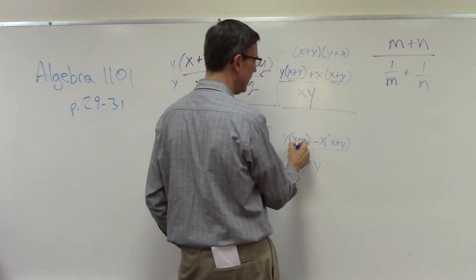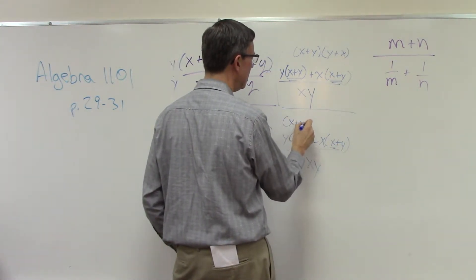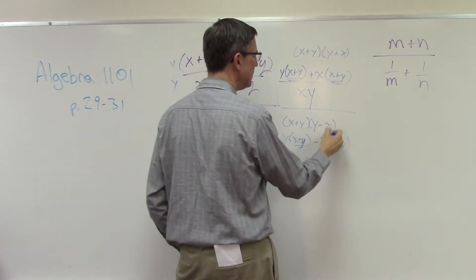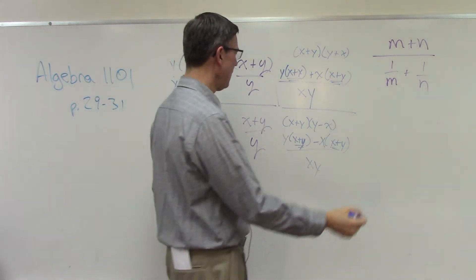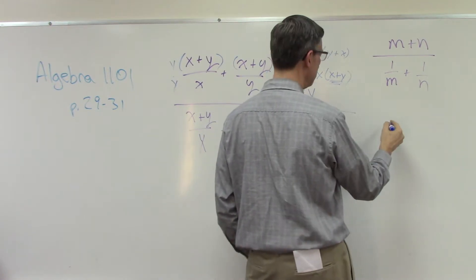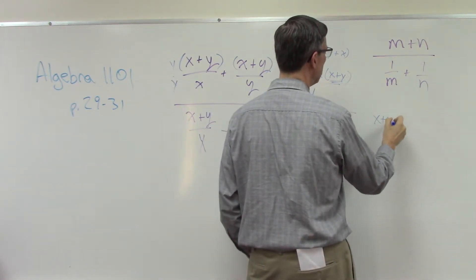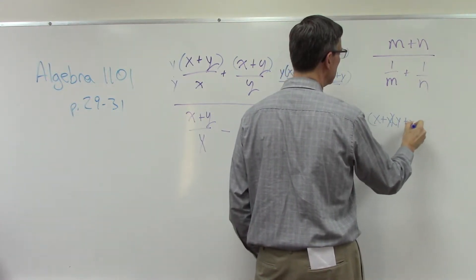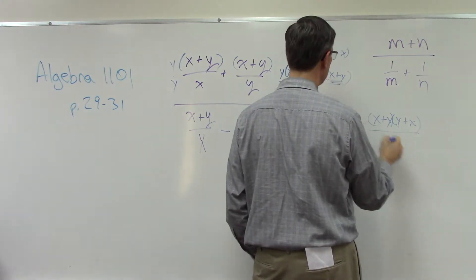Same thing happens down here, I have x plus y, x plus y, so if I factor that out, I'm left with y minus x. Now, watch what happens. I'm going to go over here and then we'll erase it when I set up this problem to do it. So I'm going to write the x plus y, y plus x, over xy.